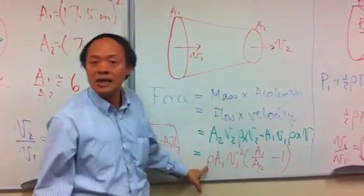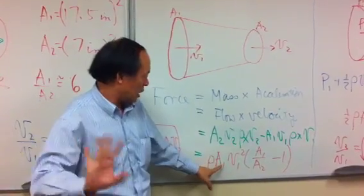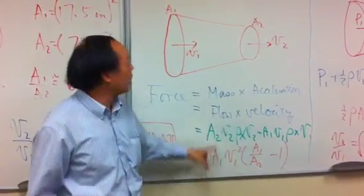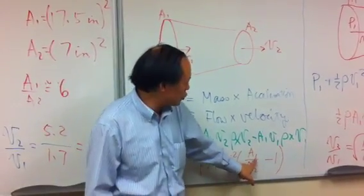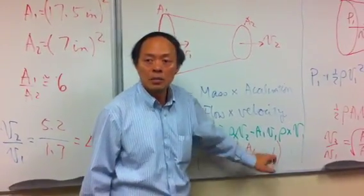rho, the density of air, times A1 which is the area at the input, times the input velocity squared, multiplied by the ratio which is A1 divided by A2 minus 1.